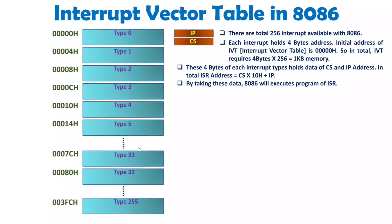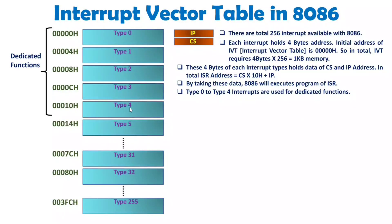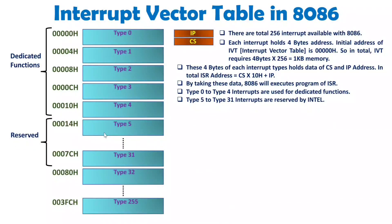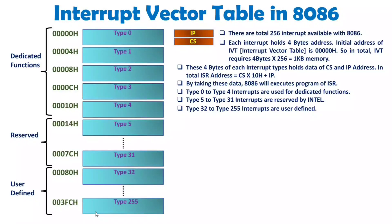Let us understand the categories of interrupt types with 8086. Type 0 to type 4 are for dedicated functions — well-defined functions built into 8086. Type 5 to type 31 are reserved for Intel, for future processors. And type 32 to type 255 are user-defined, where the user can define all these interrupt types.